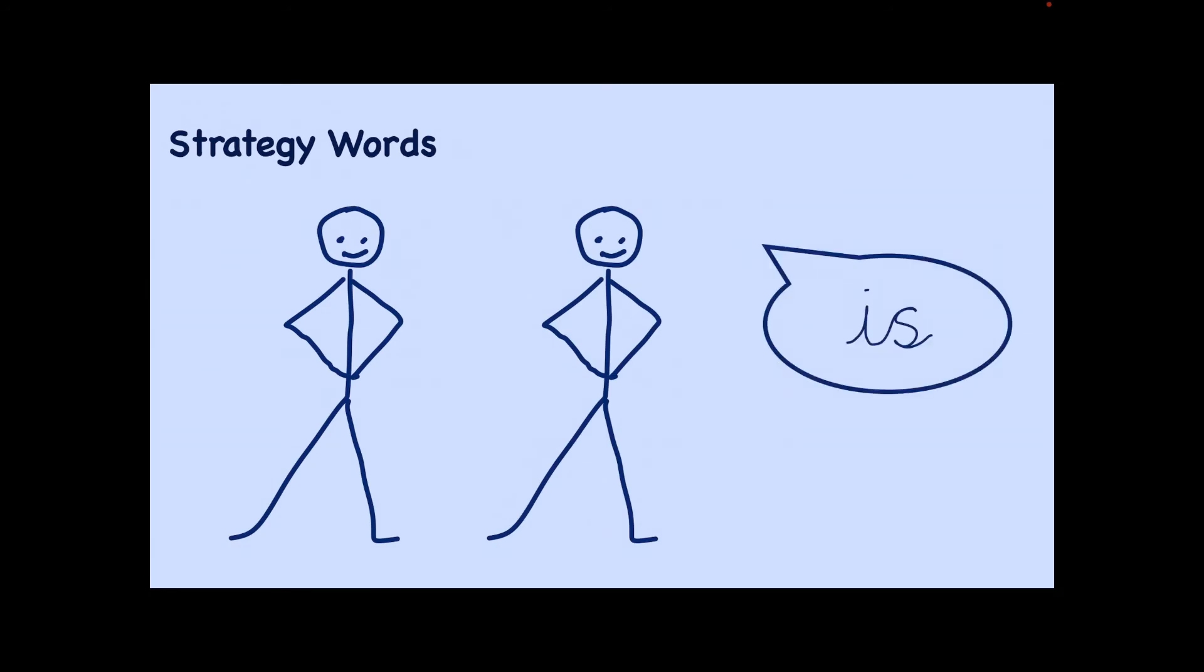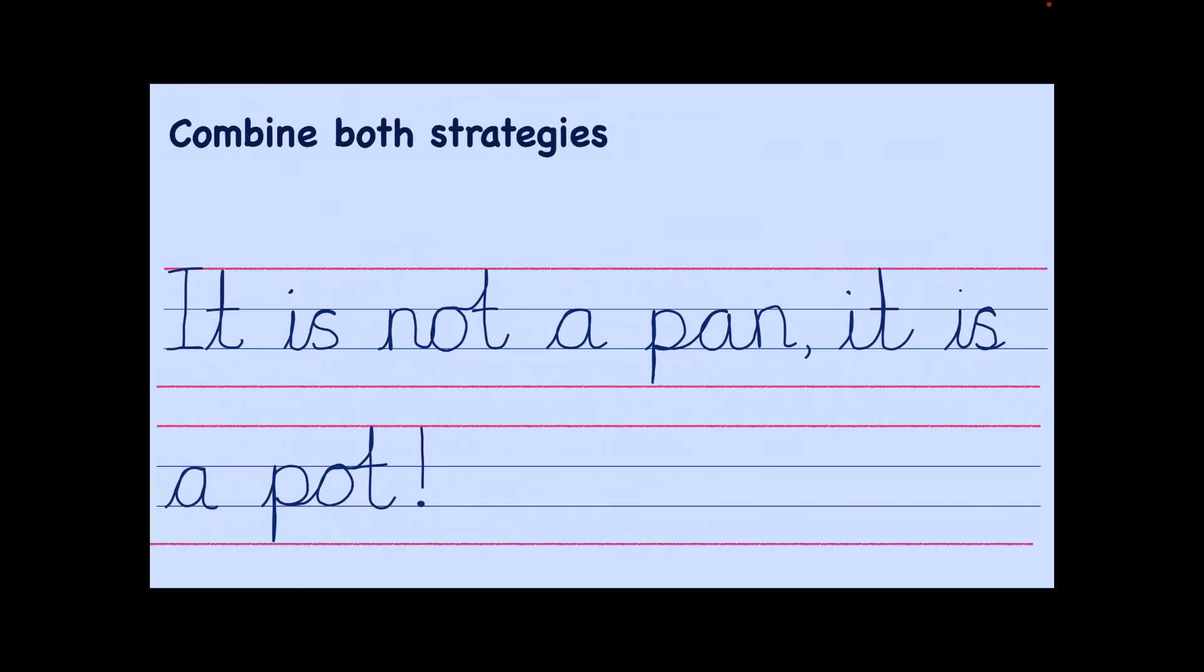And then we've got a few something extra words where we need a strategy. So maybe you've been learning them using letter names. I, S. Is. That is a lot of learning. We're combining two different strategies for spelling words.